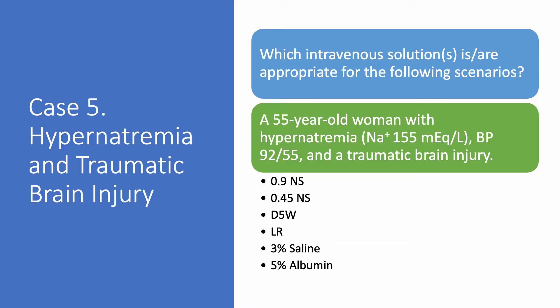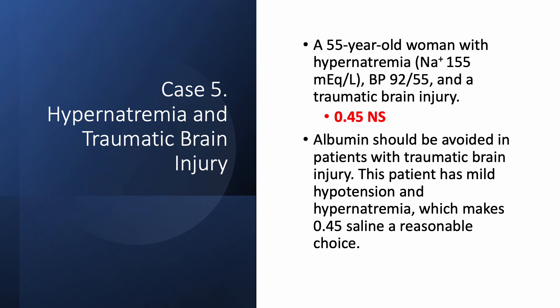Case number five: hypernatremia and traumatic brain injury. A 55-year-old woman with hypernatremia, sodium 155, blood pressure 92/55, and traumatic brain injury. The appropriate option is 0.45% normal saline. The sodium is high, so you want to give a slightly hypotonic solution. D5W is not a bad option, but with low blood pressure you want to give 0.45% saline to correct the hypernatremia and also support blood pressure. Albumin should be avoided in traumatic brain injury — a study in the New England Journal of Medicine showed increased mortality — so albumin is definitely a wrong answer.